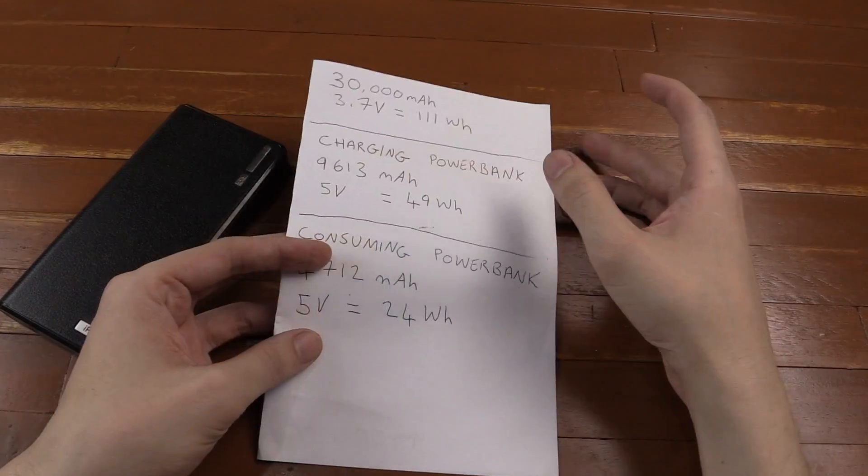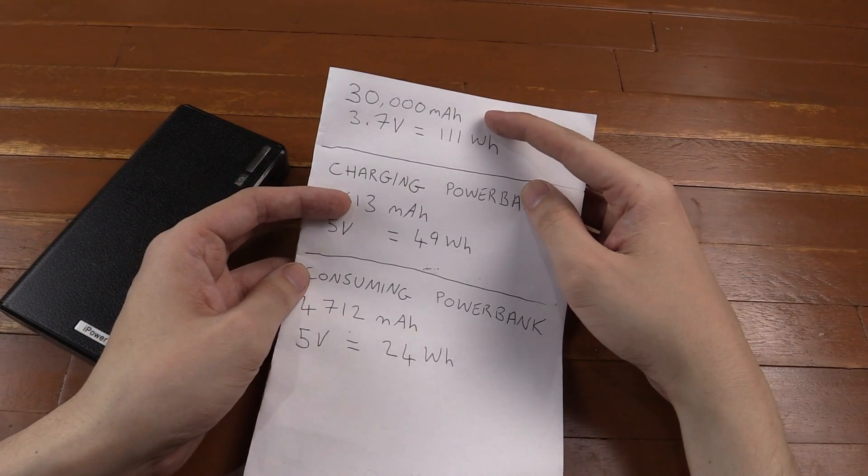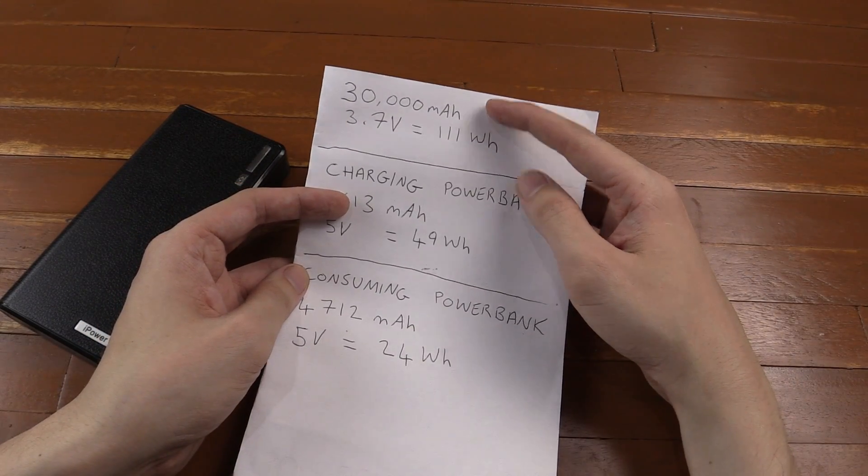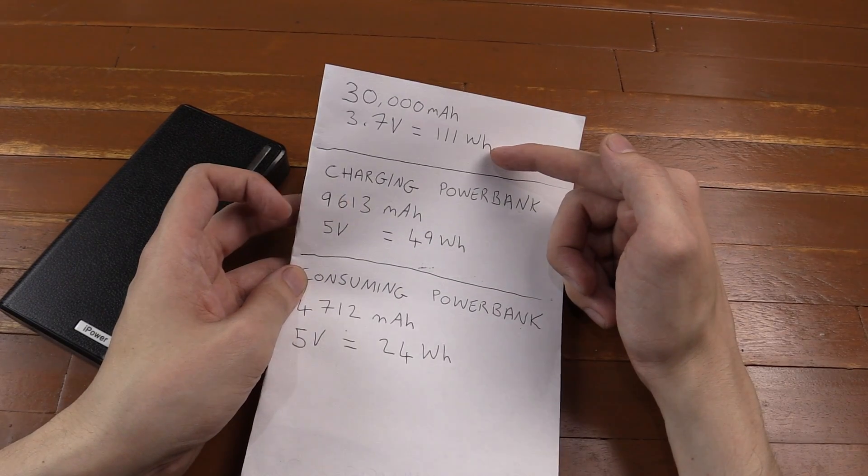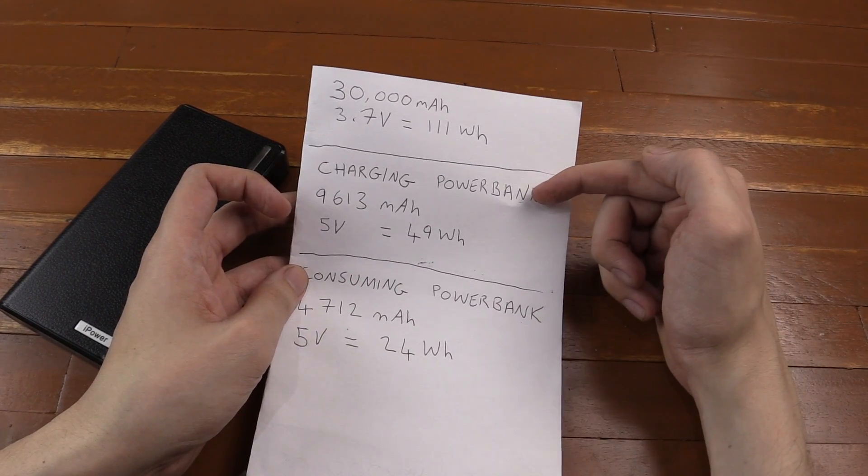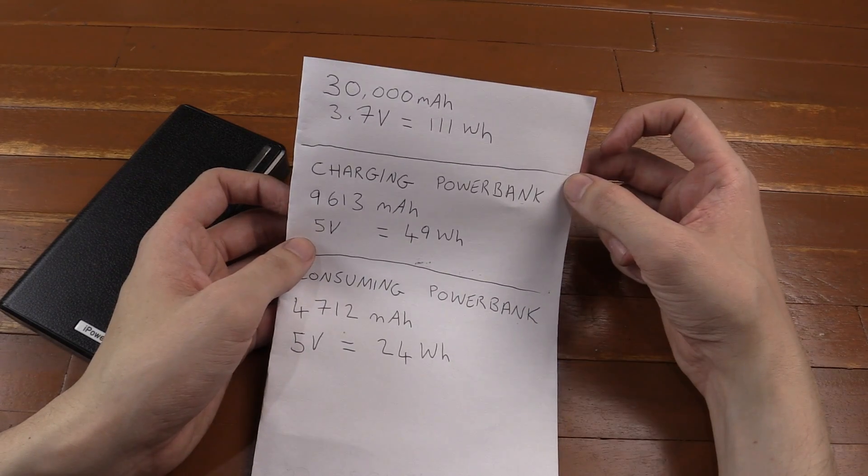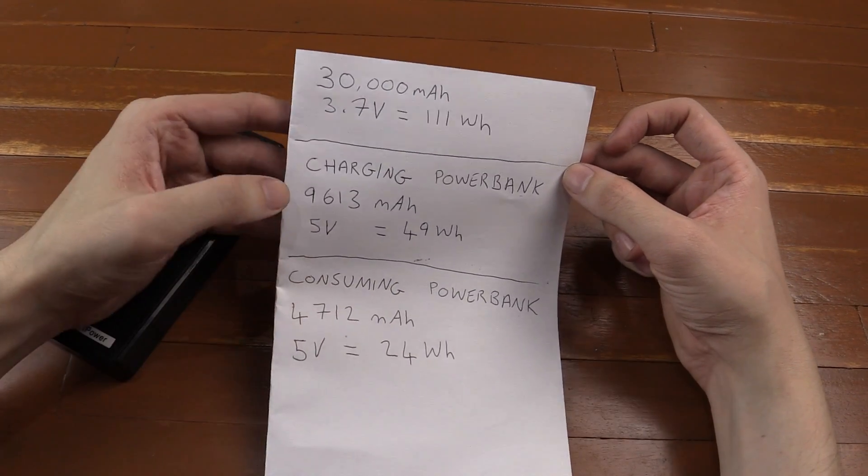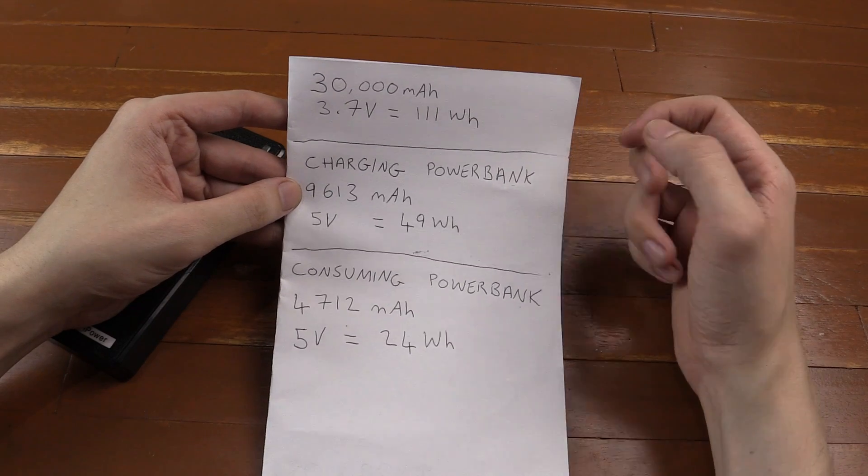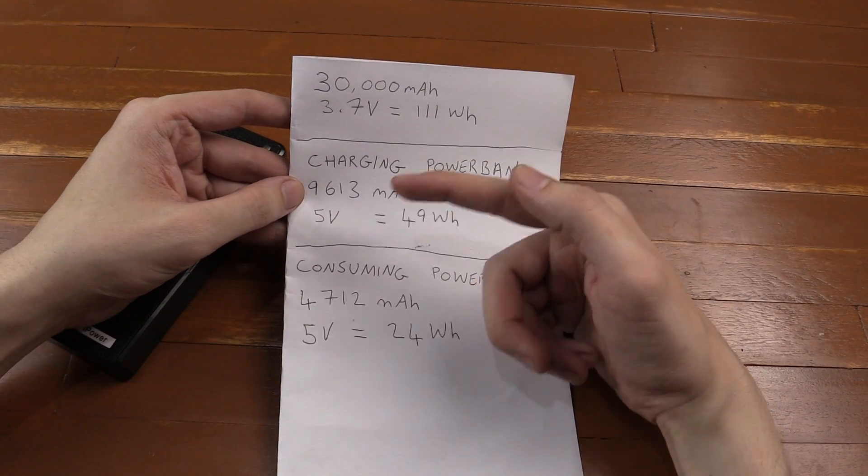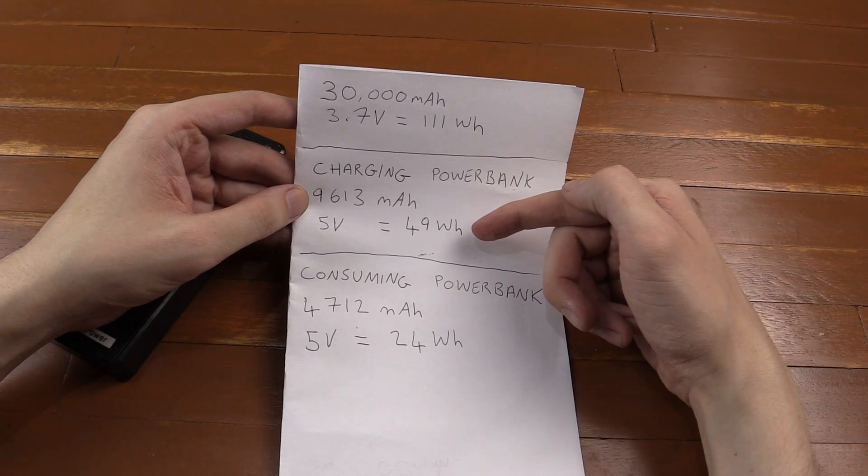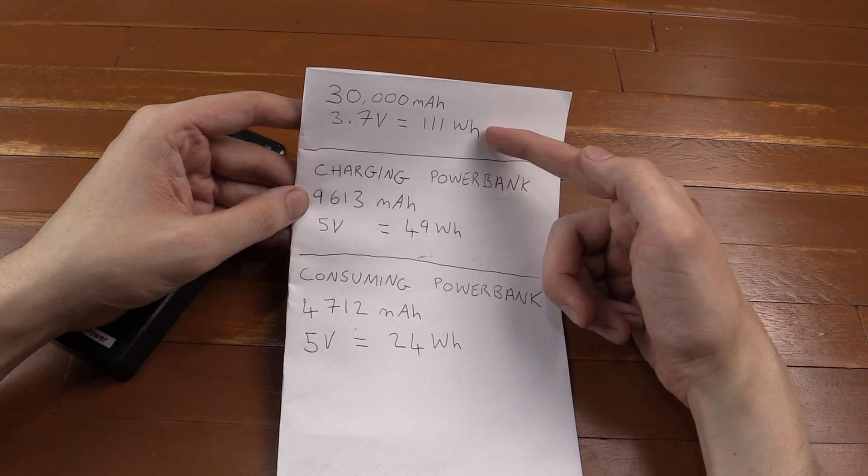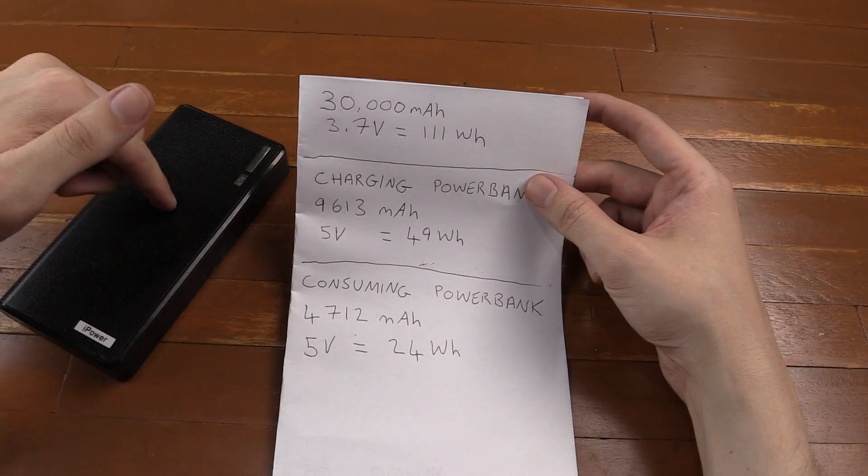So here are our final figures. It's meant to be a 30,000 milliamp-hour battery, and at 3.7 volts, that works out to 111 watt-hours. Now when we were charging the power bank, we charged at 5 volts, which is obviously higher than 3.7 volts. So although we only pulled out 9,613 milliamp-hour, it was a higher voltage, so that works out to 49 watt-hours. So that doesn't sound too bad, right? It's around maybe 40% of what this is meant to be.